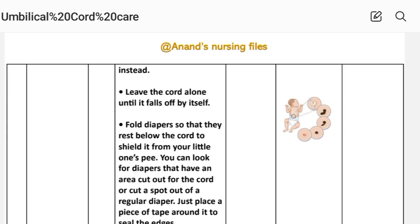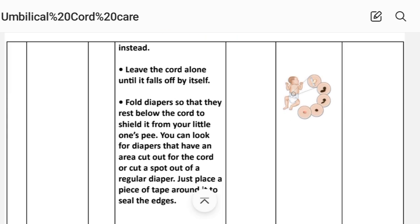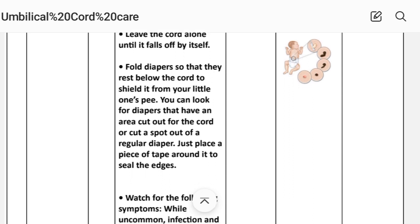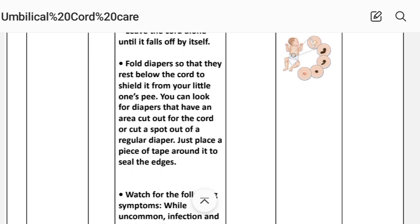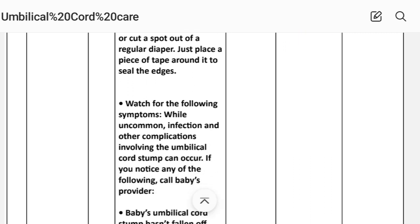Continue: leave the cord alone until it falls off by itself. Fold the diaper so that it rests below the cord to shield it from your little one's urine. You can look for diapers that have an area cut out for the cord, or cut a spot out of a regular diaper and place a piece of tape around it to seal the edges.